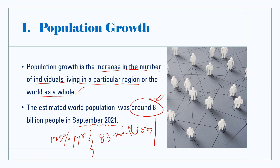The countries with the largest populations were China and India, each with over 1.3 billion people. They were followed by the United States, Indonesia, Pakistan, Brazil, Nigeria, Bangladesh, and Russia.